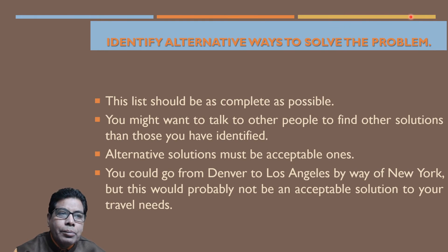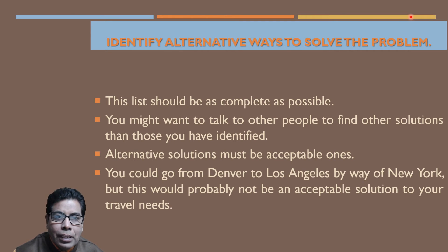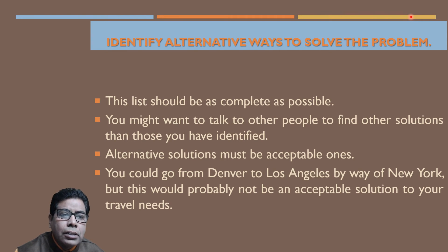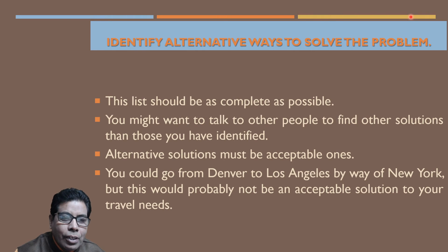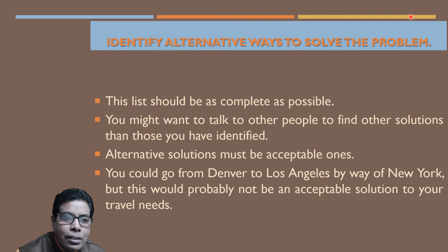The next step is to identify alternative ways to solve the problem. This list should be as complete as possible, taking into account all alternative ways to solve the problem. You may want to talk to other people to find solutions beyond those you have already identified, making use of the experience of others. Alternative solutions must be acceptable — for example, going from Denver to Los Angeles by way of New York would probably not be an acceptable solution to your travel needs. The solution should be feasible and without unreasonable constraints.